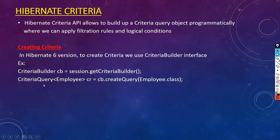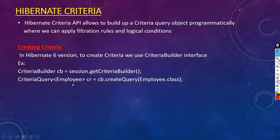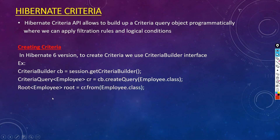The first step is to use the CriteriaQuery interface and specify which entity class we are applying this on. The entity class name I'm using here is Employee. So: CriteriaQuery<Employee> cr = cb.createQuery(Employee.class).